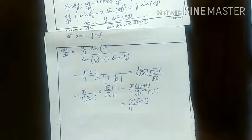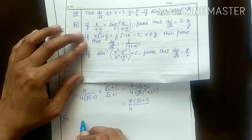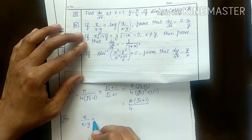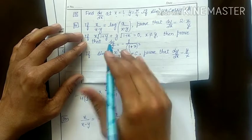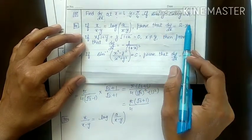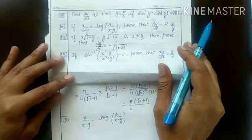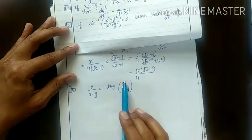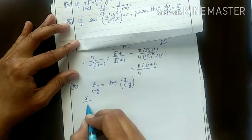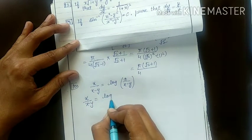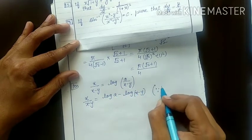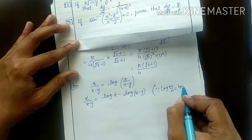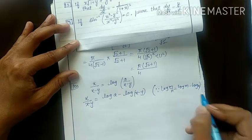Next is Example 10. Given x upon x minus y equals log of a upon x minus y, and you have to prove that dy by dx is 2 minus x upon y. What you can do is apply the formula log m upon n equals log m minus log n on the right side — mention that log m upon n equals log m minus log n.